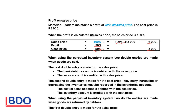When we use the perpetual inventory system, two double entries are completed when goods are sold. The first double entry is at the sales price, so the bank or debtors control will be debited — depending on whether we sell for cash or on credit — with the sales price, because the money deposited or the amount owed equals the sales price. The sales account is credited to increase the income. The second double entry will be for the cost price. The cost of sales is debited to increase the expense, and the inventory account is credited with the cost price to decrease the amount of inventory available.